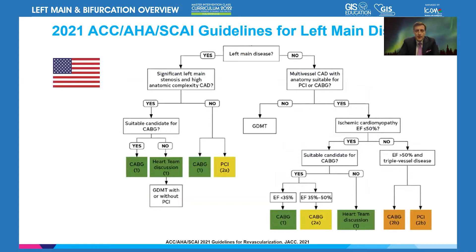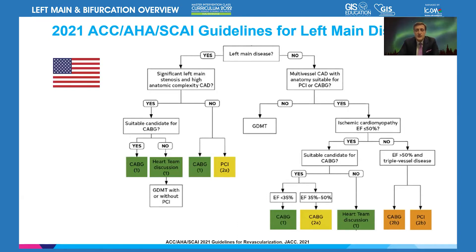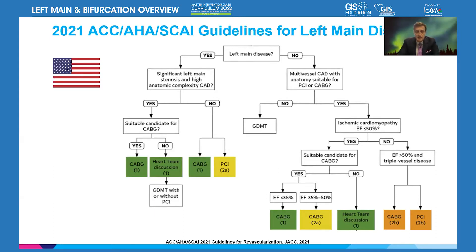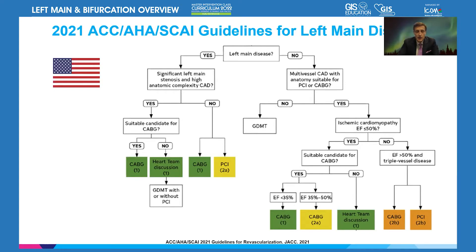For left main disease, the number one question is whether there is multi-vessel CAD or not. If the answer is yes, then whether the patient is suitable for CABG is the primary question. If the answer is no, it would be PCI or CABG as discussed. Guideline-directed medical therapy always has to accompany either approach — with or without PCI, and with or without CABG.